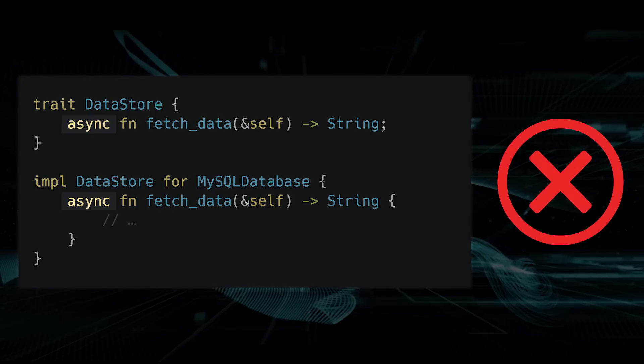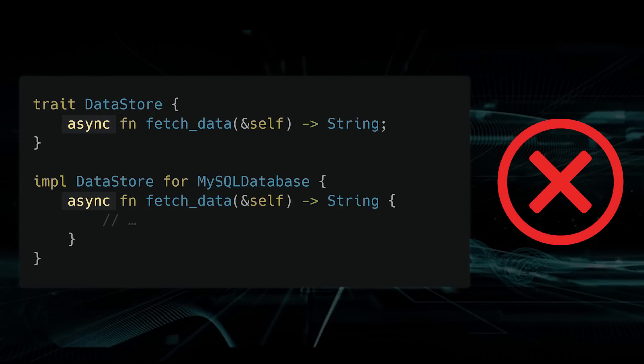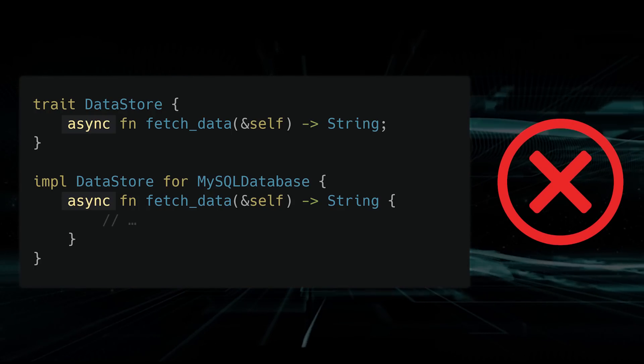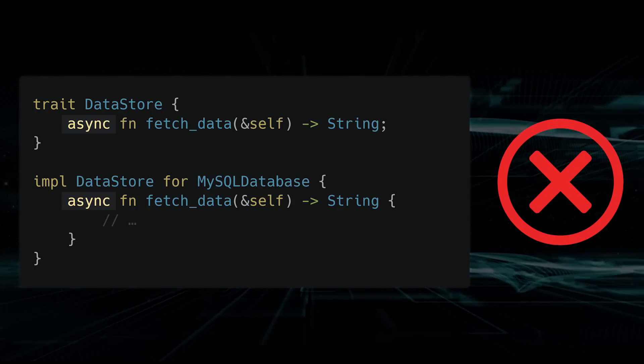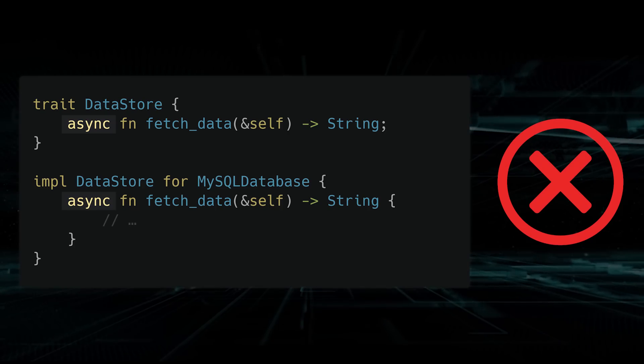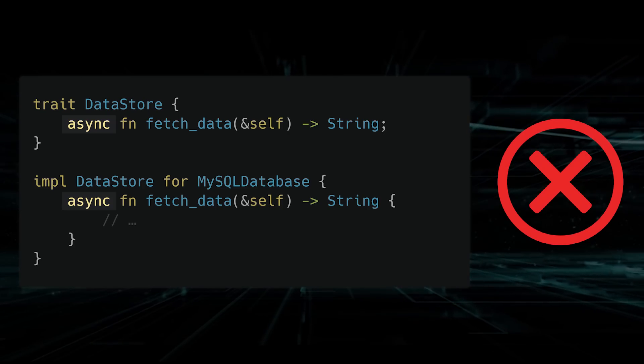The problem is, currently, you cannot define async functions or methods inside traits in stable Rust, which makes it difficult to share asynchronous behavior across different types.